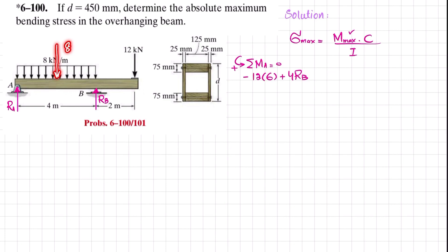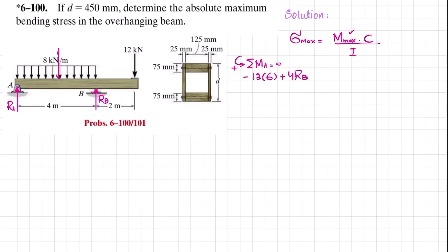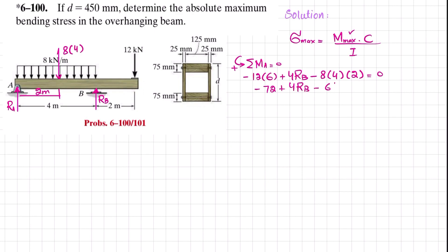The third moment is due to the uniformly distributed load converted to a point load: 8 times 4, acting at the midpoint, 2 meters, producing a clockwise moment, so minus 8 times 4 times 2. Their sum must equal zero, giving minus 72 plus 4 R_B minus 64 equals zero.